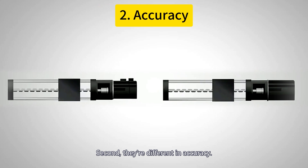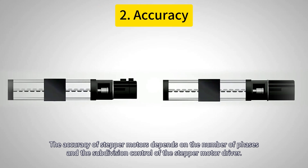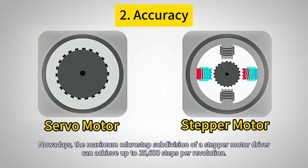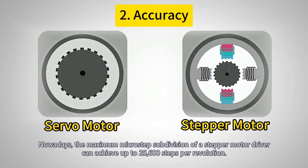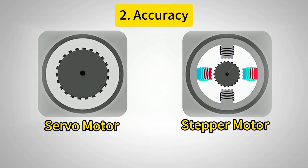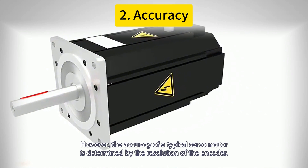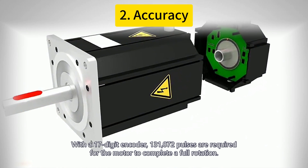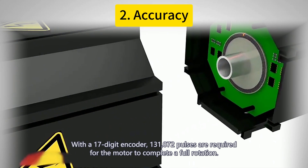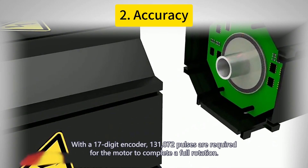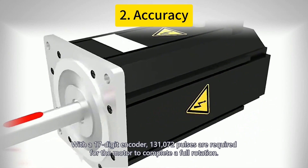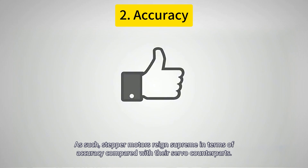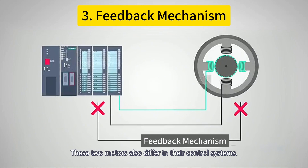Second, they are different in accuracy. The accuracy of stepper motors depends on the number of phases and subdivision control of the stepper motor driver. Nowadays, the maximum microstep subdivision of a stepper motor driver can achieve up to 25,600 steps per revolution. However, the accuracy of a typical servo motor is determined by the resolution of the encoder. With a 17-bit encoder, 131,072 pulses are required for the motor to complete a full rotation. As such, stepper motors rank supreme in terms of accuracy compared with their servo counterparts.